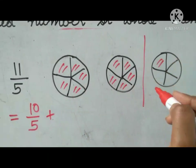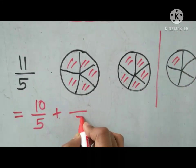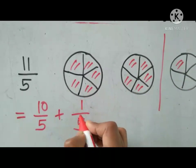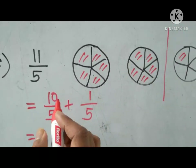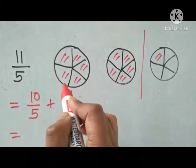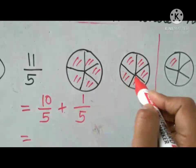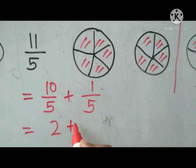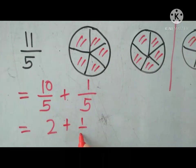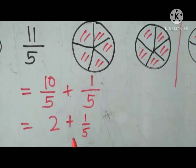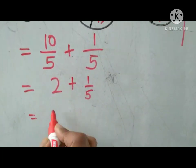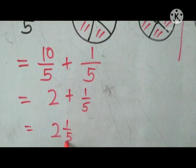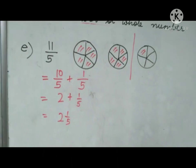What is the denominator of the remaining piece? 5. How many parts are shaded? 1. So 10 over 5 — how many whole figures are here? 2. So here you write 2, plus this remaining piece written as 1 over 5. The answer will be 2 whole and 1 over 5.